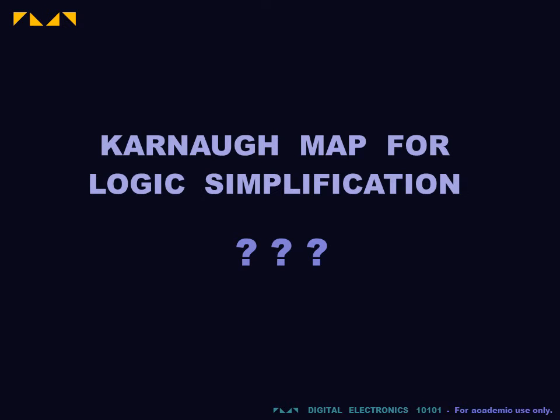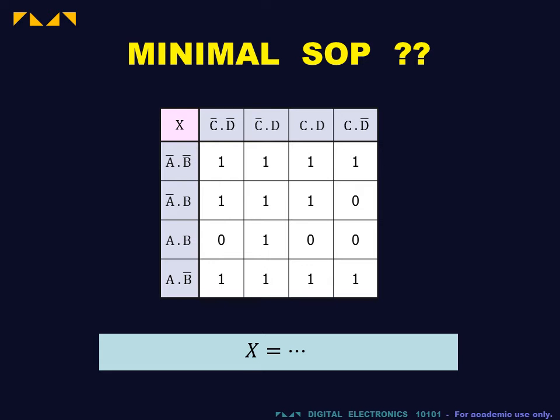We will address how to use the Karnaugh map for logic simplification. In the previous video, we saw how to produce a Karnaugh map for four input variables. We now address how to use this as a tool for obtaining the minimal sum of products expression.